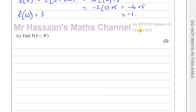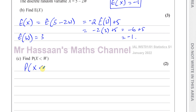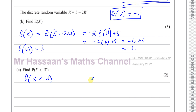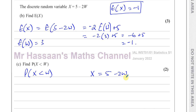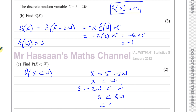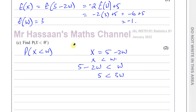Now for part C: the probability that X is less than W. We know X equals 5 minus 2W, so substituting: 5 minus 2W is less than W. Rearranging gives 5 less than 3W, so five-thirds is less than W. Therefore W is greater than five-thirds, which is one and one-third.